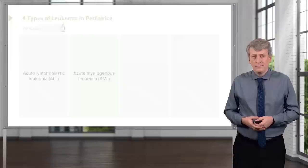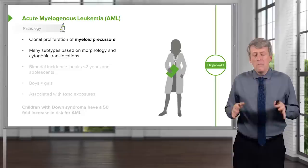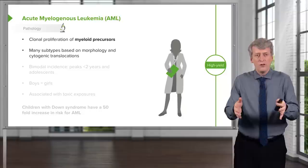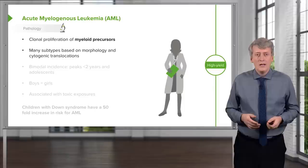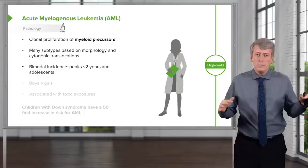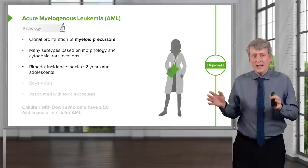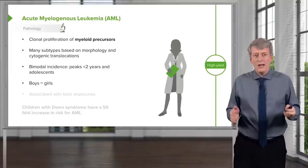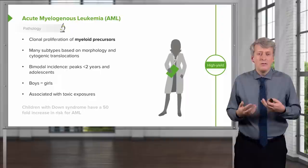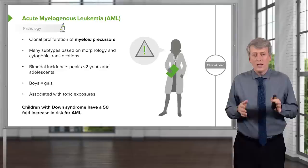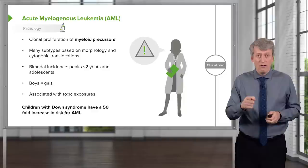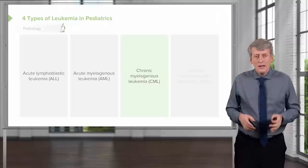Comparing that to AML, which is acute myelogenous leukemia — AML is a clonal proliferation of myeloid precursors. There are many subtypes based on cell morphology and cytogenic translocations. There's a generally bimodal incidence: one peak in children under two years of age, and again in adolescence. Unlike ALL, the rate in boys and girls is about the same, and AML is associated with some toxic exposures and genetic predispositions. For example, children with Down syndrome have a 50-fold increase in their risk for AML — remember that strong association.